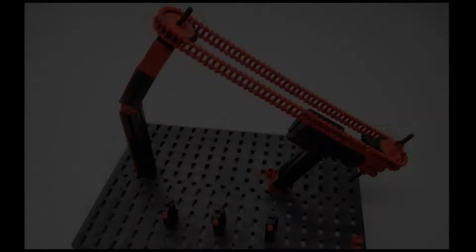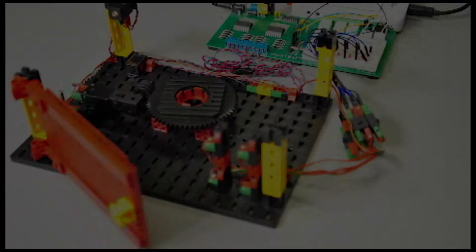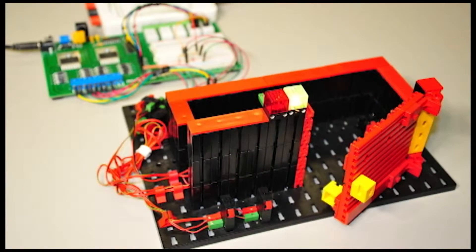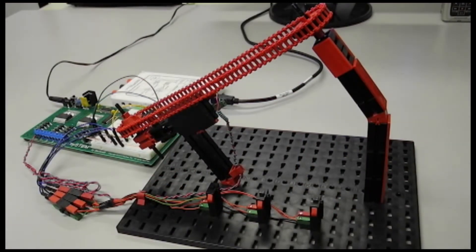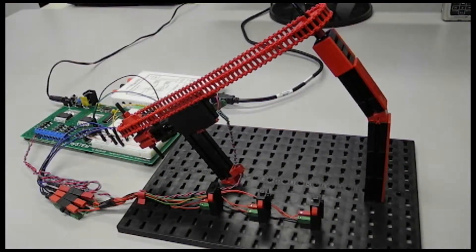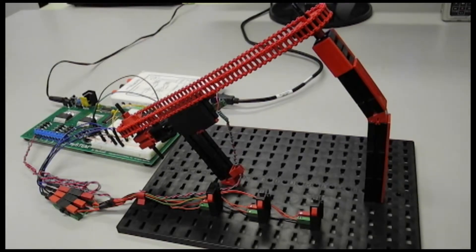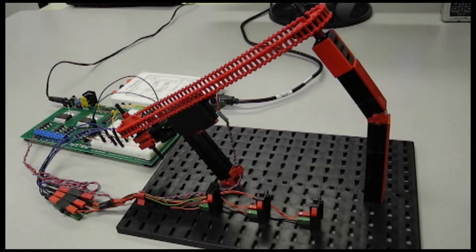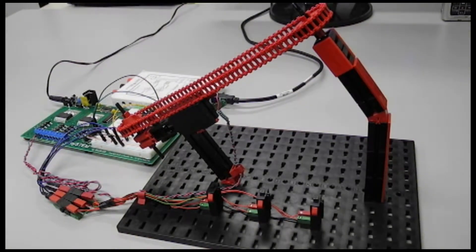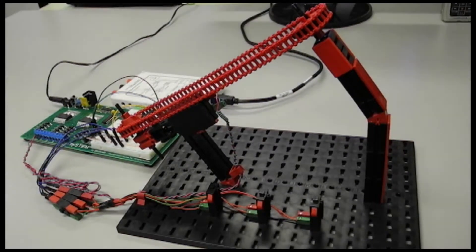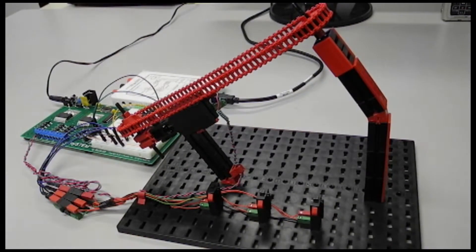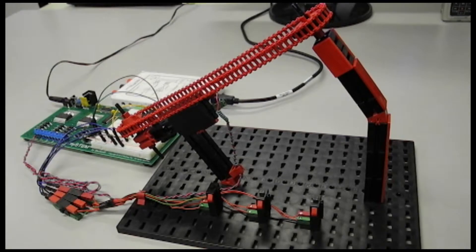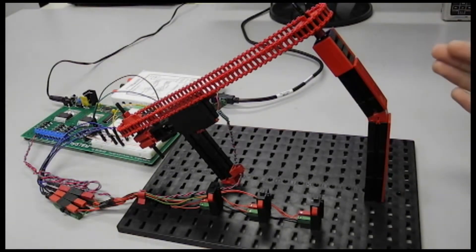We created four different models which incorporated mechanical and programming aspects. This is another model that we've built which replicates the mechanisms of a ski lift. This model utilizes a motor that is connected to a gearbox which works with other gears that are of 0.22 ratio.